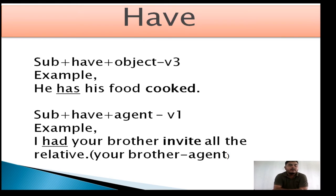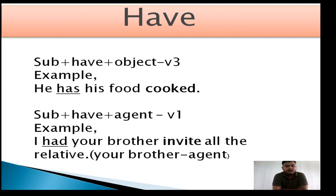The second causative verb is 'have.' The rule is: Subject + have + object = verb 3. If 'have' is followed by an object, the verb must be verb 3. Example: 'She has his food cooked.' In this sentence, 'has' is the causative verb. 'His food' is an object because it is talking about food, not a person. So 'cooked' is verb 3.